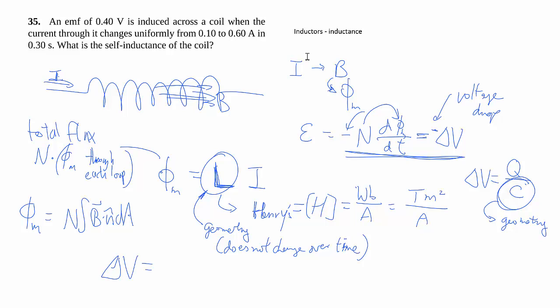ΔV as the voltage drop, we're going to say that, put that negative there, of the flux, which we have defined to be L times I. And because we've said that this does not change over time, that can come out.